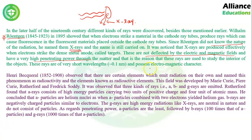Then Henry Becquerel showed that certain elements on their own emit radiation — no bombardment or other phenomenon is needed; the radiation happens spontaneously. He named this phenomenon 'radioactivity', and elements which spontaneously emit radioactive rays are called radioactive elements. Further work in this field was done by Marie Curie and Rutherford. Rutherford — who was a student of J.J. Thomson — showed that there are three types of rays: alpha, beta, and gamma.